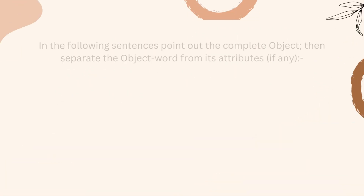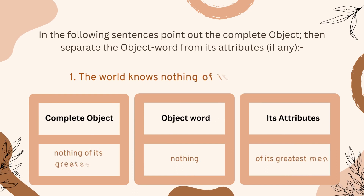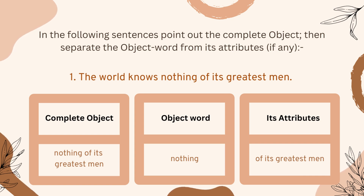Let's start. The very first sentence is: 'The world knows nothing of its greatest men.' Here, 'nothing of its greatest men' is the complete object. 'Nothing' is the object word, and 'of its greatest men' — these four words are used as attributes of 'nothing.'